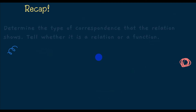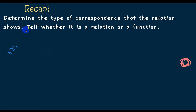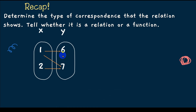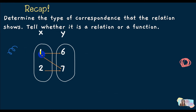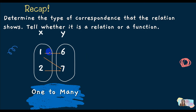Let's proceed to some examples. We are going to determine the type of correspondence and whether the relation is a function or not. The first relation is in mapping diagram form. As you can see, the element 1 in x has two partners in y. So the correspondence is one-to-many, meaning there is a repeated x — this is not a function.